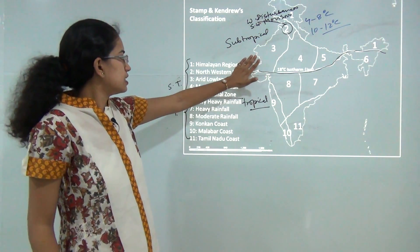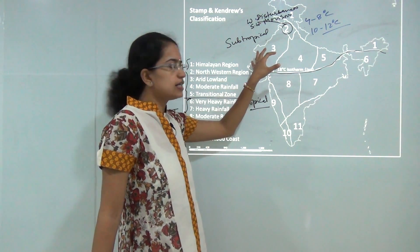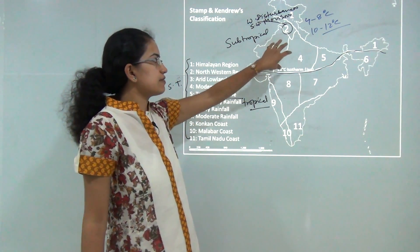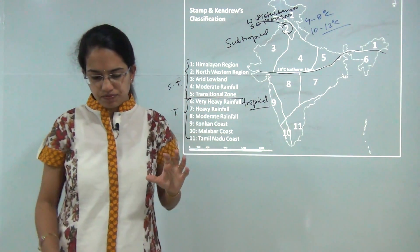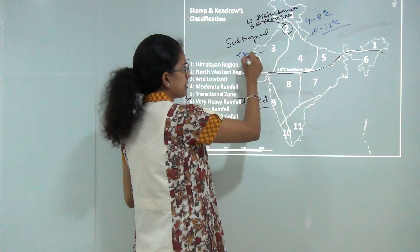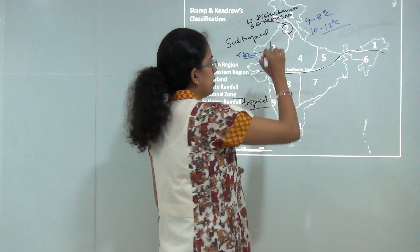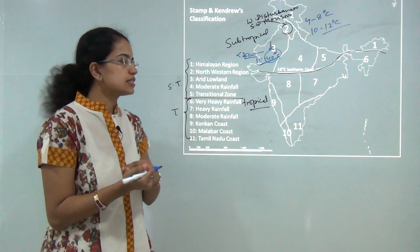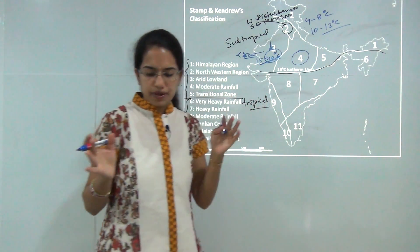Region 3 is the arid lowland — mainly the desert region of Rajasthan, the Kutch area, western Gujarat, and parts of western Madhya Pradesh. Annual rainfall is very low — less than 25 centimeters — and temperature ranges from 15 to 40 degrees Celsius, with summer temperatures around 40 degrees or higher and winter nights dropping below 15 degrees Celsius.